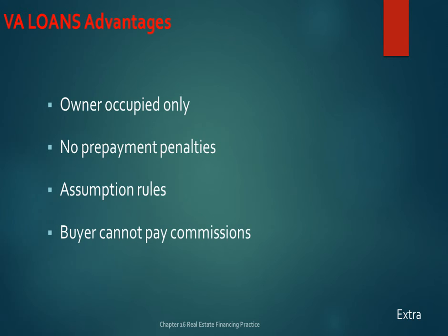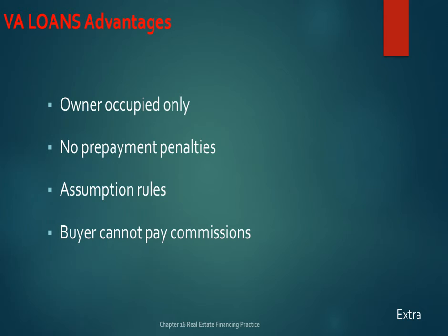The key thing to know: FHA loans are insured, VA loans are guaranteed, and you should know what a CRV — Certificate of Reasonable Value — is. Issued by the VA, the CRV works like an appraisal; if the property falls within VA guidelines, the CRV tells the VA whether they should guarantee the loan. In some cases, this allows 100% financing for eligible veterans.